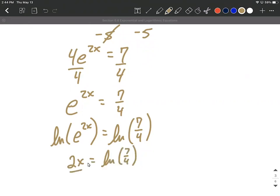And to get x all by itself, we'll divide both sides by 2. That puts x on one side all by itself. This is an exact solution, but we could get an approximate solution by using our calculator 0.2798.